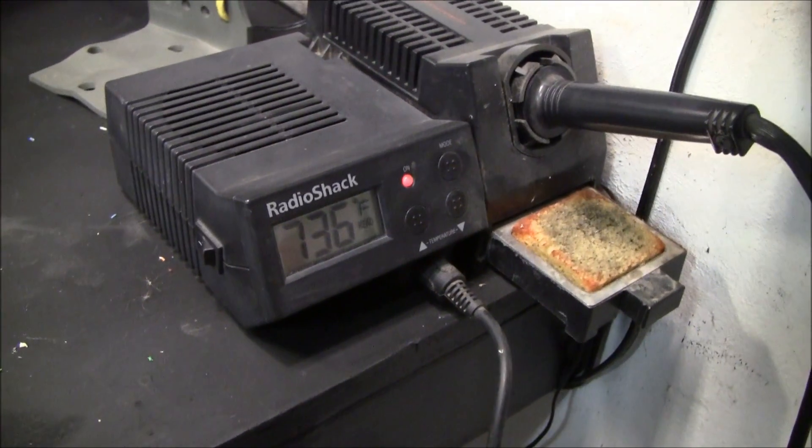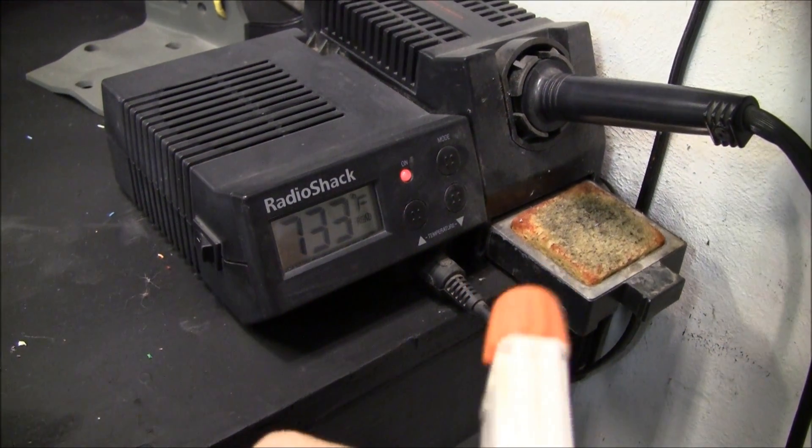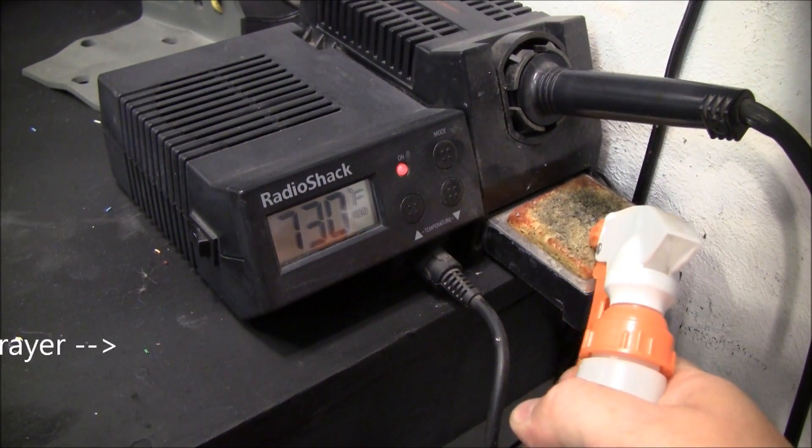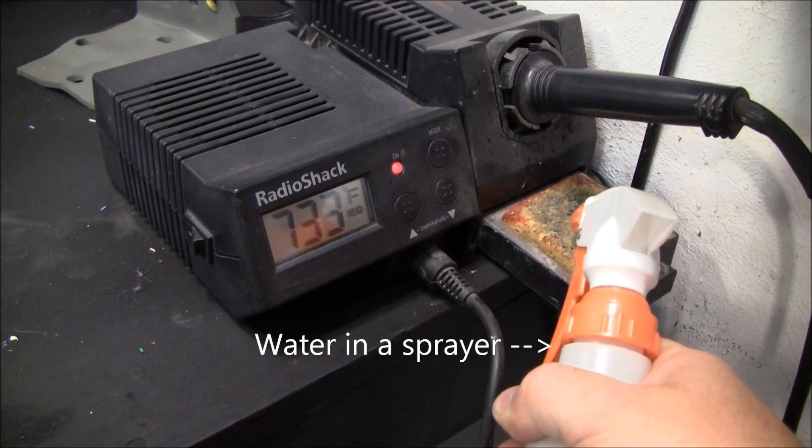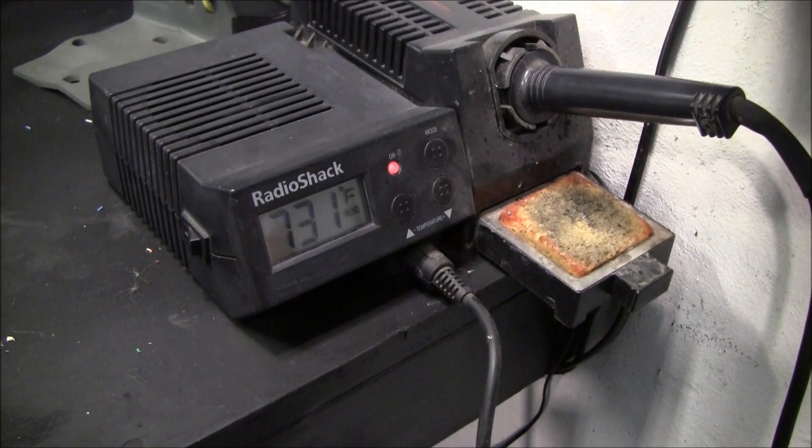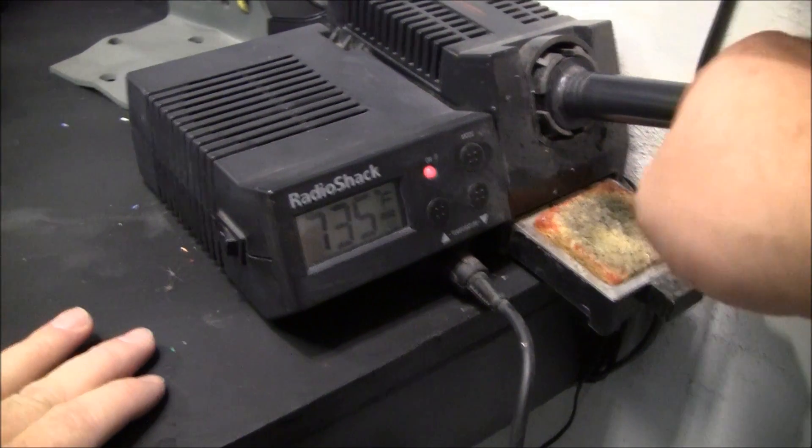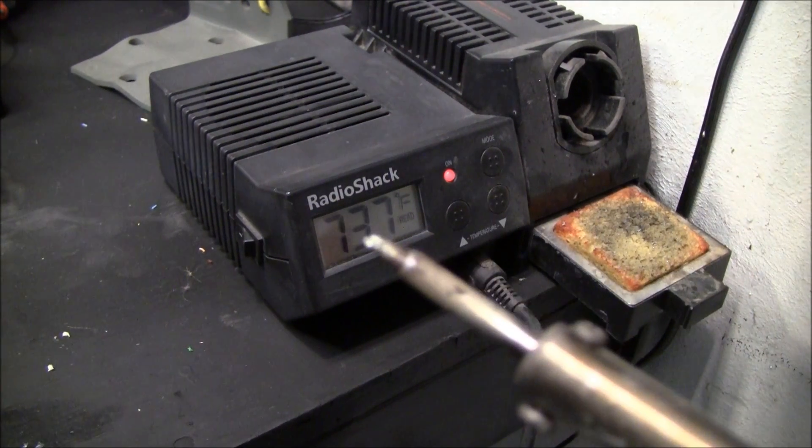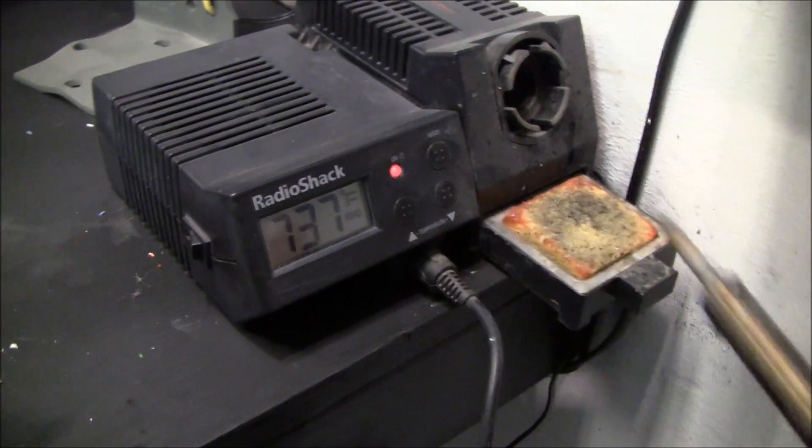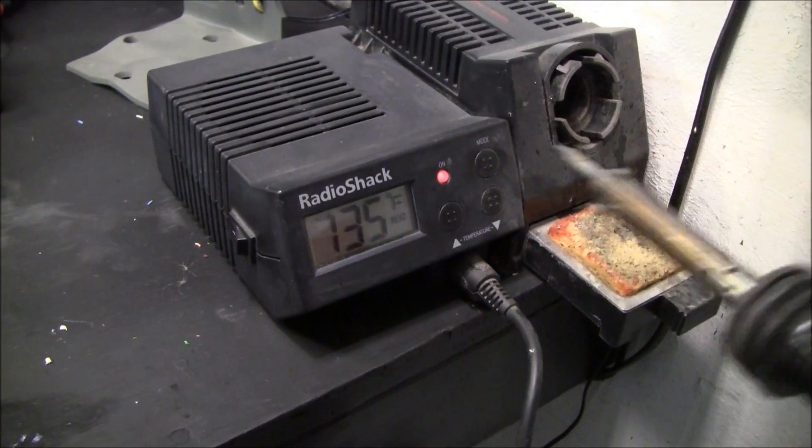So here's my iron - just be sure to use the little sponge, get it a little wet before you start. That way when your iron starts getting junk on it, you go ahead and just clean it real quick, get a little bit of fresh solder on there, and you're ready to start working.